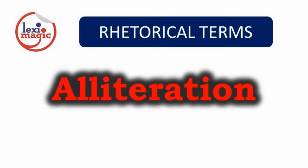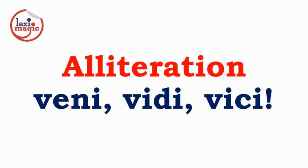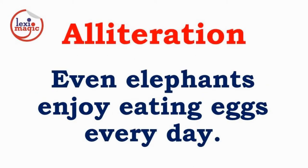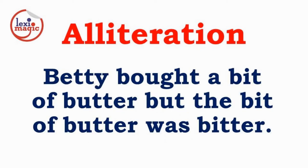Alliteration is a repetition of the same sound for each word in a sentence. Examples: 'Veni, vidi, vici,' the Latin phrase attributed to Julius Caesar. 'Even elephants enjoy eating eggs every day.' 'Betty bought a bit of butter but the bit of butter was bitter.'